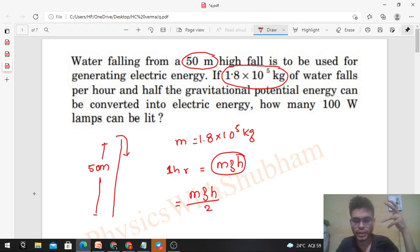So you can substitute the values: m = 1.8 × 10⁵, g = 10, h is 50, divided by 2. So this is the electric energy.